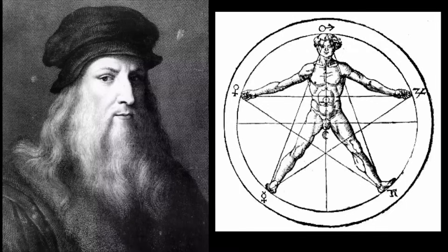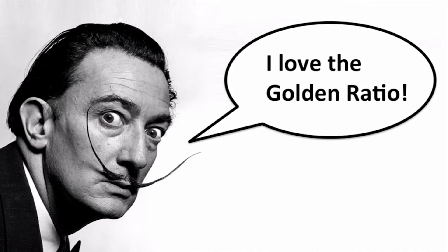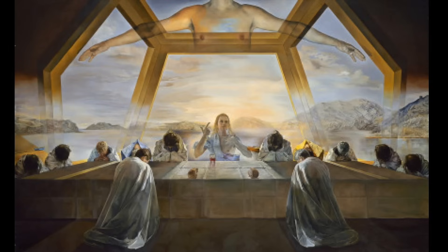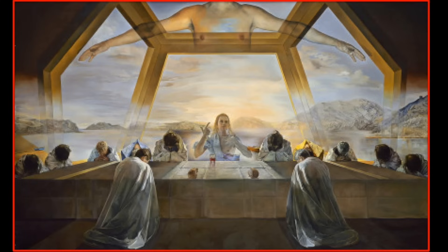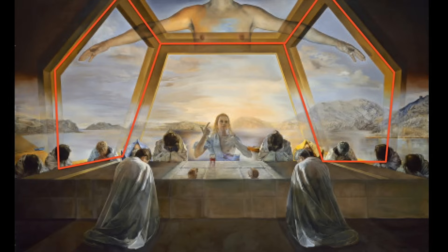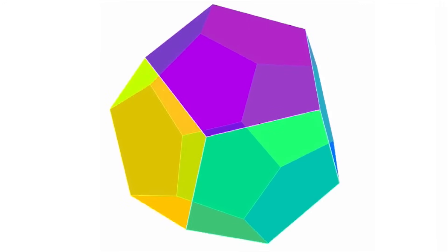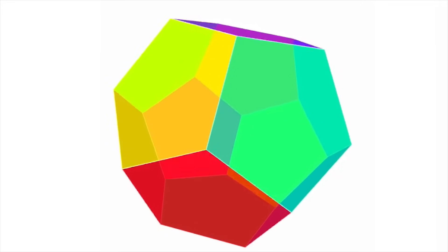Some artists have explicitly embraced this ratio, such as Salvador Dali, where the canvas for his painting The Sacrament of the Last Supper is a golden rectangle, and the windows in the background are framed by a dodecahedron, a regular solid with 12 pentagonal faces that also connects to the golden ratio.